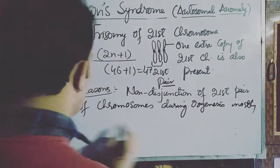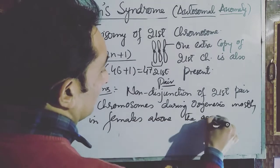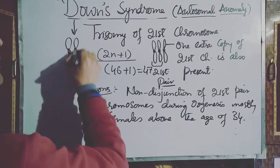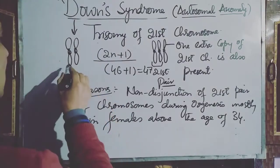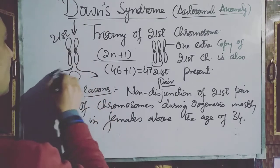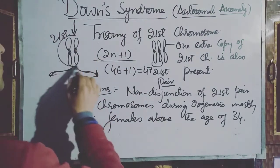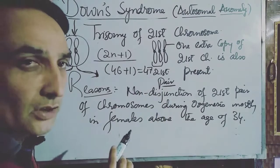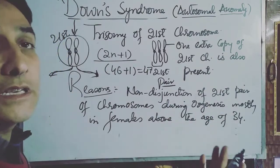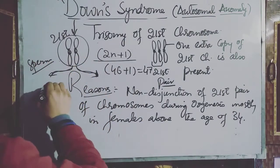This non-disjunction of the 21st pair of chromosomes occurs mostly in females above the age of 34. During meiosis in oogenesis, the 21st chromosome should get separated from its copy. But in Down syndrome, both copies of the chromosome undergo non-disjunction — they do not undergo separation due to errors in meiosis — and as such, the egg has both copies of the 21st chromosome.